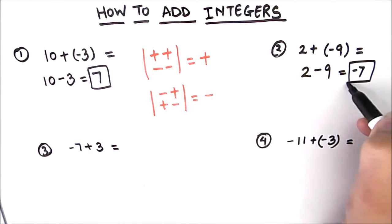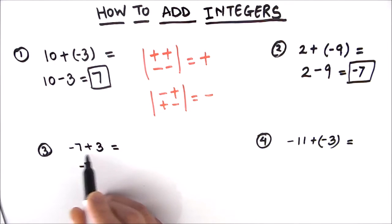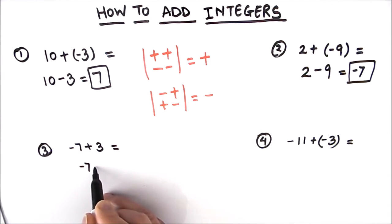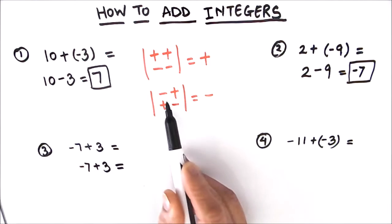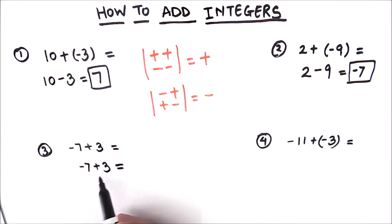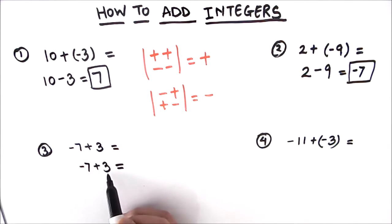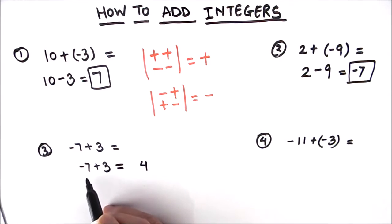Let's move on to the next example where we have negative 7 plus 3. We'll write negative 7 plus 3 as is. A negative and a positive will give us negative, so we subtract the two numbers. 7 minus 3 is 4, and the sign of the resultant will be the sign of the bigger number.